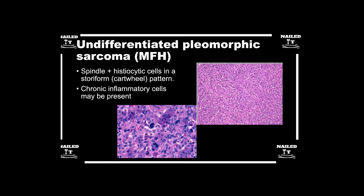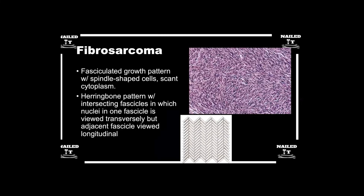To recap: for undifferentiated pleomorphic sarcoma, look for the storiform or cartwheel pattern, numerous and varied mitotic figures, and spindle cells. For fibrosarcoma, those spindle-shaped cells are organized in more of that herringbone or zigzag pattern, which is much easier to see at lower power on the microscope. A test question, if there is one, will still describe a slowly growing mass.